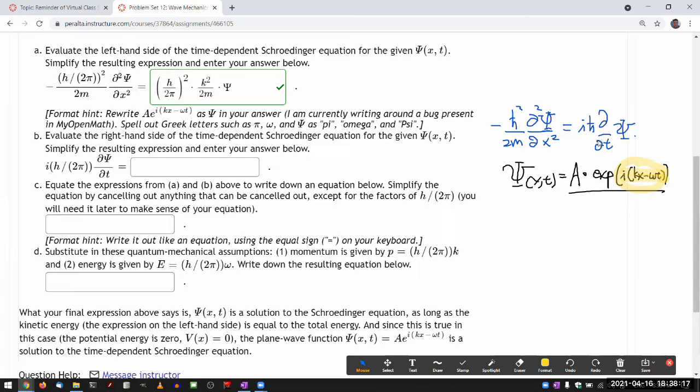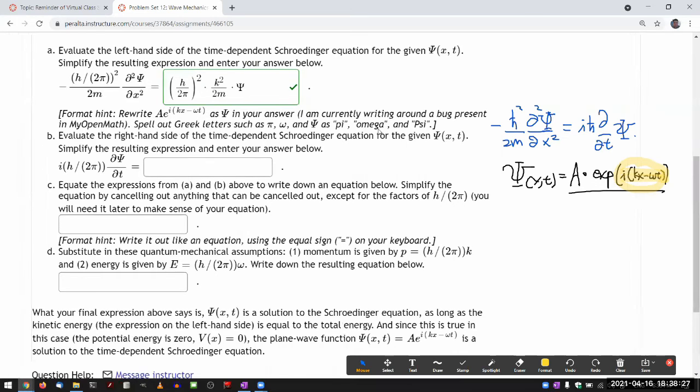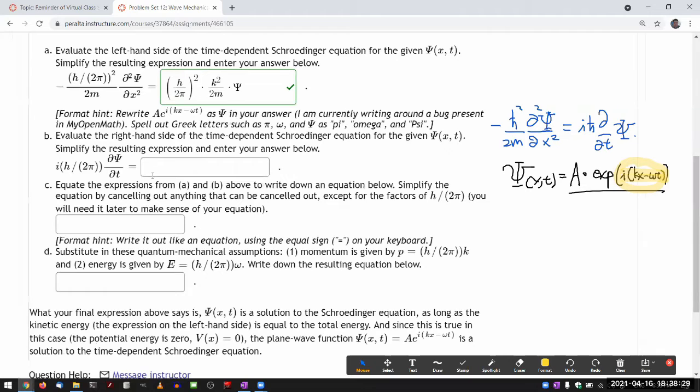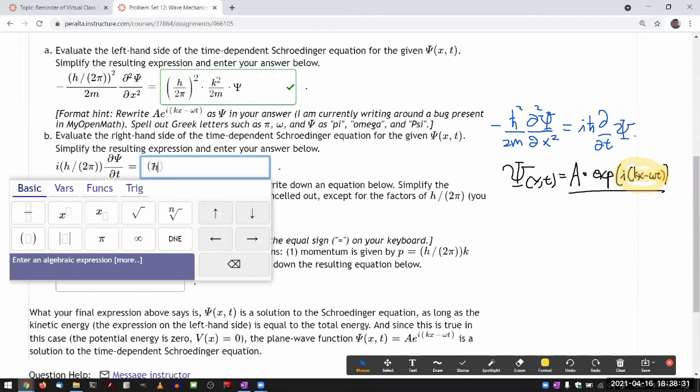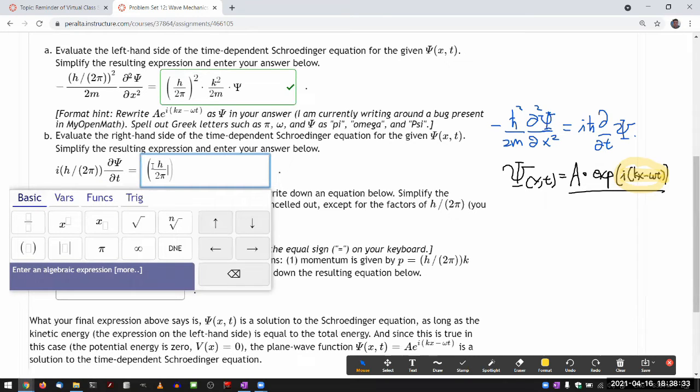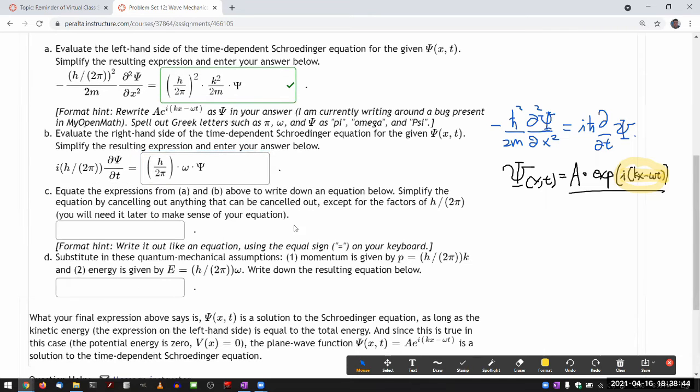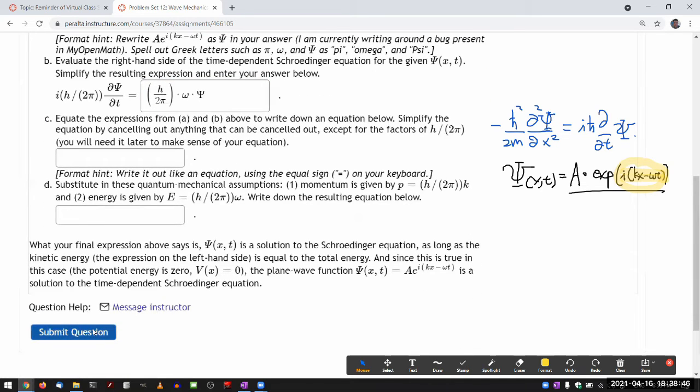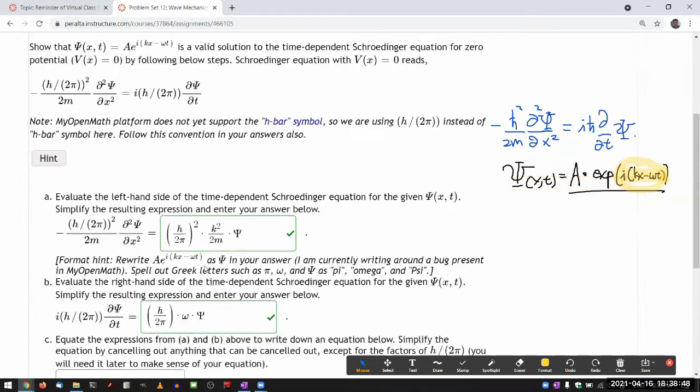multiply that to this outside here. i h bar minus i times i gives me plus one. So all I have left is h bar times omega. Let me write that out. So h bar, or in the way I have to write it this way times omega. So, oh, and I almost forgot my wave function of psi. Yeah, that should be correct. Great.